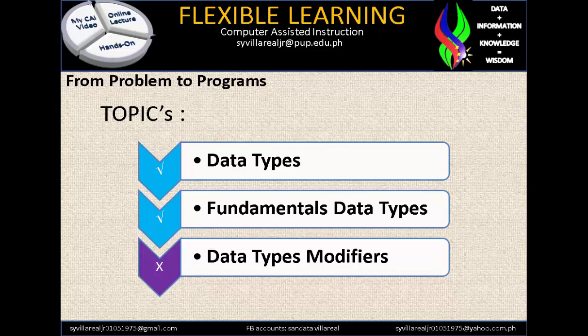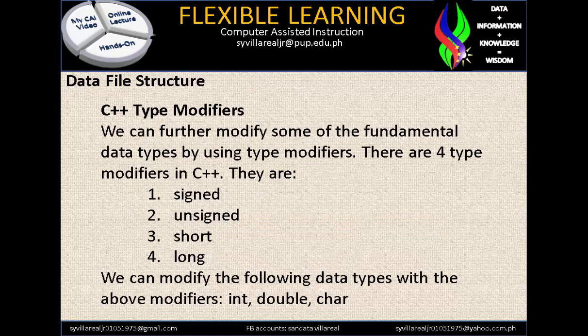Now let's proceed to our last topic, data type modifiers. In C++, we can further modify some of the fundamental data types by using type modifiers. There are four type modifiers in C++: signed, unsigned, short, and long. We can modify the following data types with these modifiers: integer, double, and character.